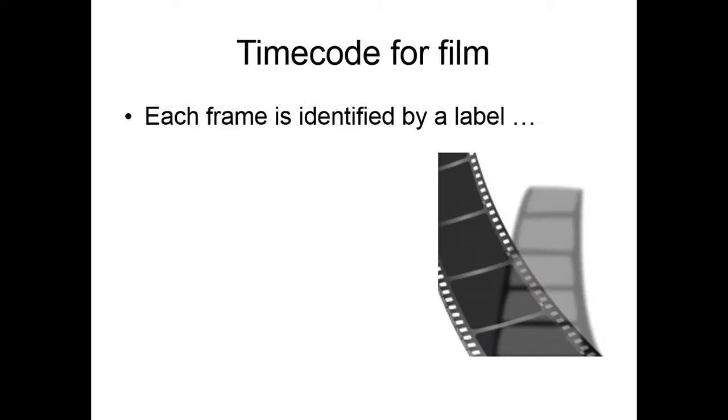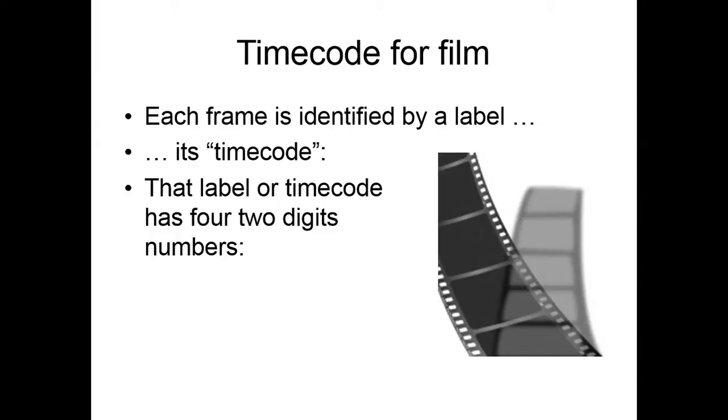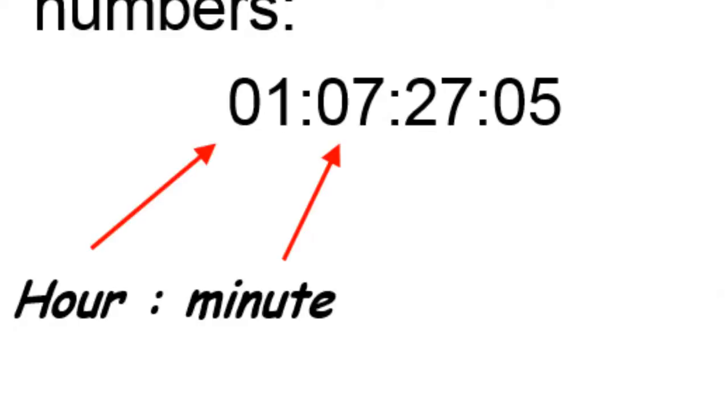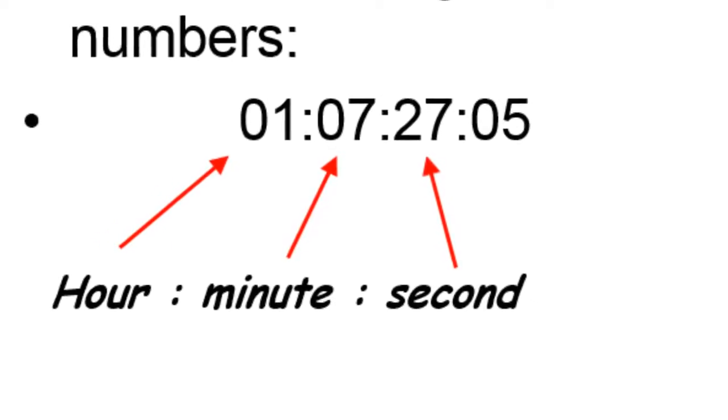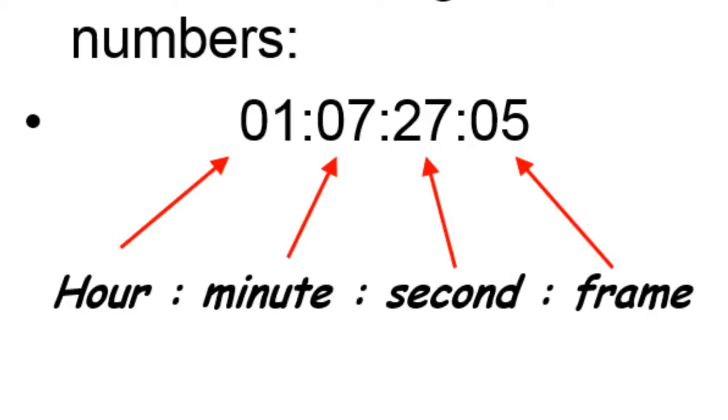Each frame in a film strip is identified by a unique label. It's called a timecode. That label or timecode has 4 numbers, each one with 2 digits. One with the hour, the second one for the minute, the second, and which frame within that second we're talking about.